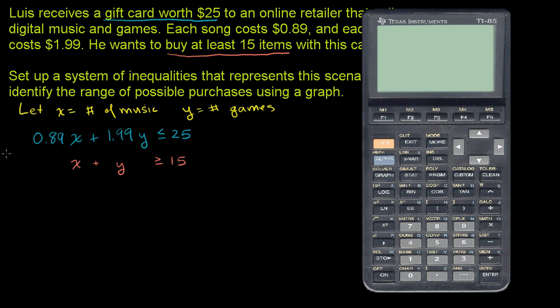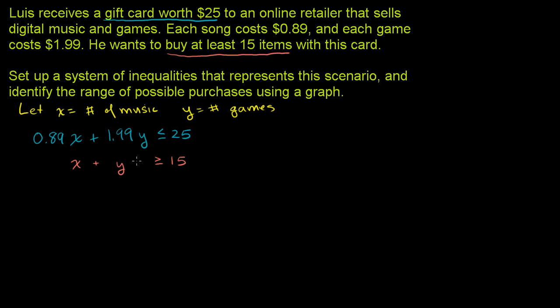Before I graph it, let me put it in slope-intercept form. The second equation, if we subtract x from both sides, we get y is greater than or equal to negative x plus 15.